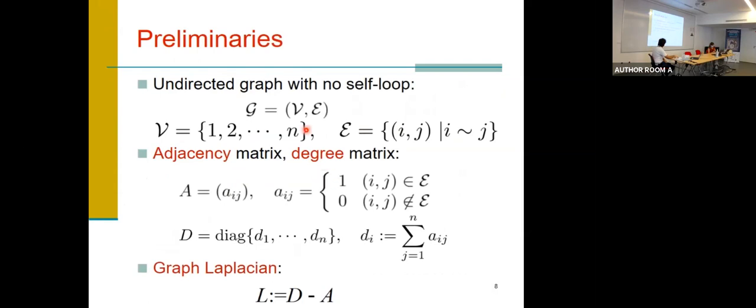So, first we consider the undirected graph. V is a vertex set from 1 to N. And E is an edge set. I and J is a vertex number, and if I is connected to J, then I and J is called edge. And for this undirected graph, adjacency matrix and degree matrix is defined like this. And graph Laplacian is defined using D and A like this.